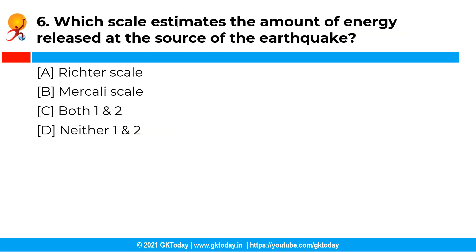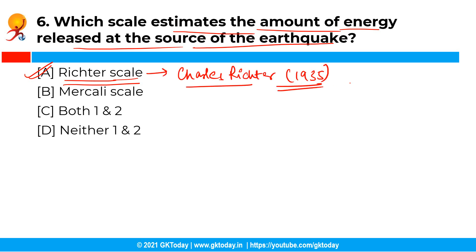The next question is: which scale estimates the amount of energy released at the source of the earthquake? You have the following options and the correct answer is option A, that is the Richter scale. The Richter magnitude scale estimates the amount of energy released at the source of the earthquake, and the Richter magnitude concept was introduced by Charles Richter in the year 1935.